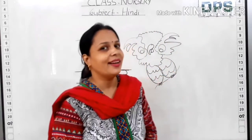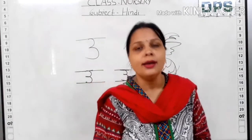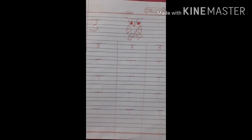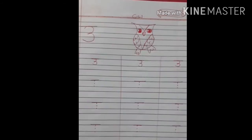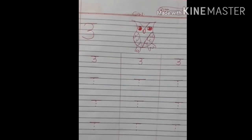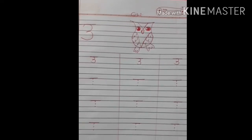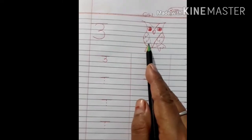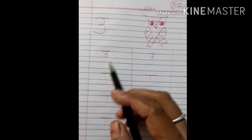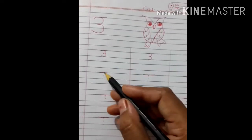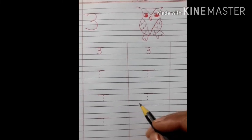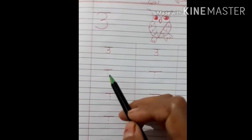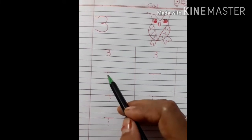Now we have learned to write it on the board. It's time to write Chhota U say Ullu in our Hindi notebook. So children, this is your Hindi copy. Here we write Chhota U say Ullu today. This is U and this is Ullu. Now look here how to write Ullu.